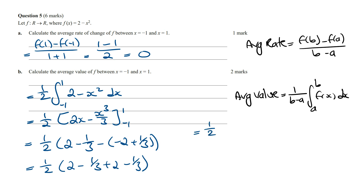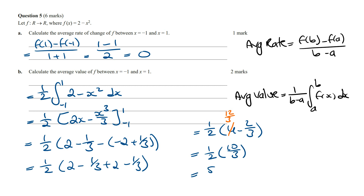Cleaning this up, this is going to be a half times 2 minus 1 on 3 plus 2 minus 1 on 3, which becomes a half times 4 minus 2 on 3. Writing 4 as 12 on 3, this equals a half times 12 on 3 minus 2 on 3, which is 10 on 3. The 2 and 10 cancel and so this equals 5 on 3.